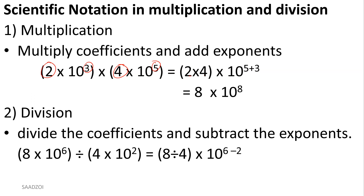For division, you divide the coefficients and subtract the exponents. So divide eight by four, because those are the coefficients, and subtract six minus two, which gives us 2 times 10 to the fourth.